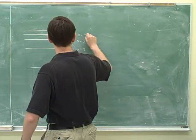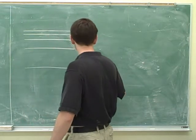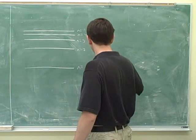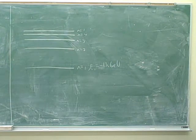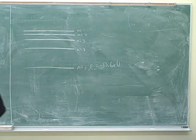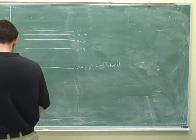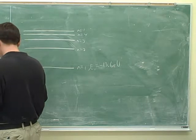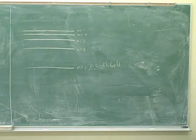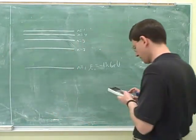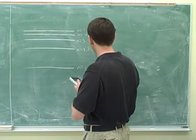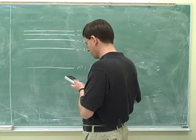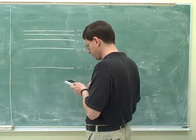So we know the energy for n=1 for oxygen is negative 13.6 eV. And then it's negative 3.4, then negative 1.5, and then negative 0.85, and then 0.544.